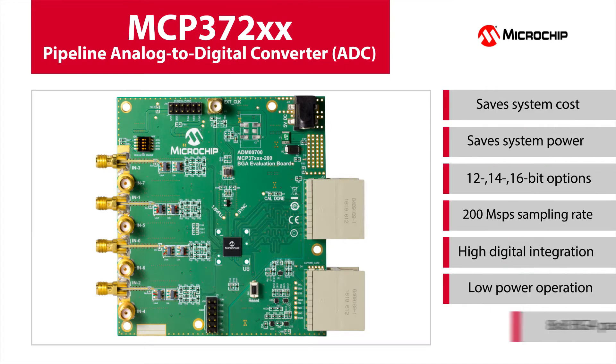With Microchip Technology's MCP372XX family of pipeline analog-to-digital converters, the internal 200 mega-samples per second analog-to-digital converter can be divided in up to 8 channels through the internal multiplexer.